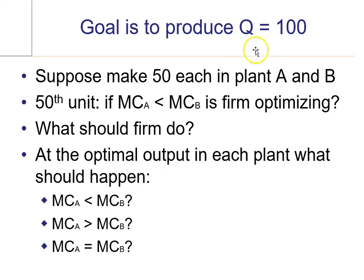However, it would save some money because the marginal cost in one plant is lower than the other plant. You want to keep producing in the lower marginal cost plant.